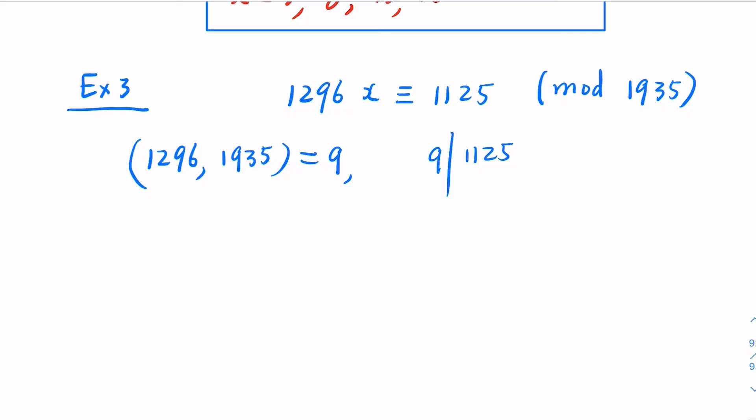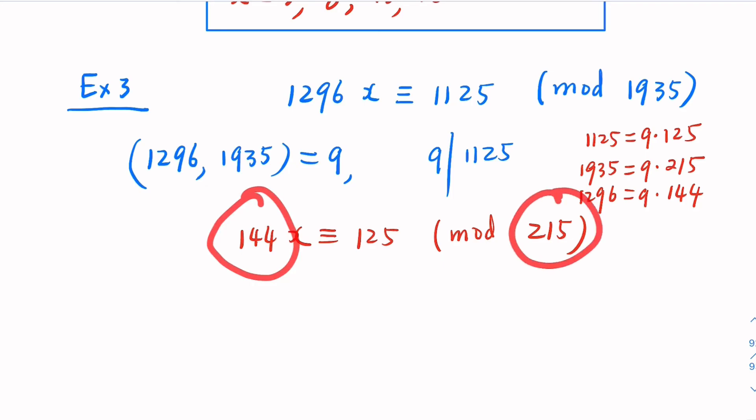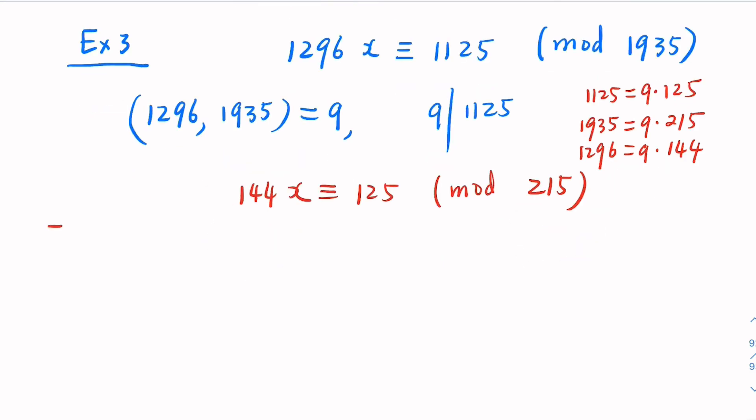We need to divide 9 on both sides. So, it's equivalent. We try to solve this equation here, which is 144x congruent to 125, and the mod 215. 1125 is 9 times 125, and the 1935, 9 times 215. 1296 is 9 times 144. The relatively prime. Go back to case number 1. Euclidean algorithm here.